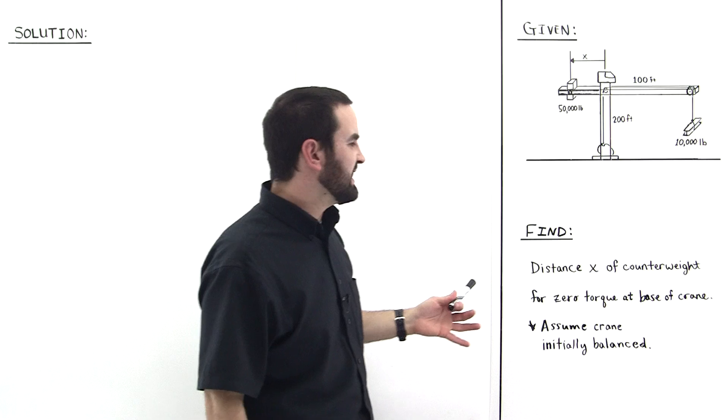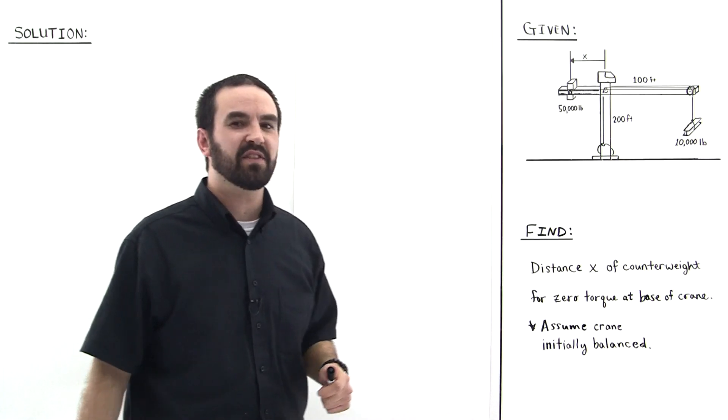So we are asked to find the distance x of the counterweight for zero torque at the base of the crane.